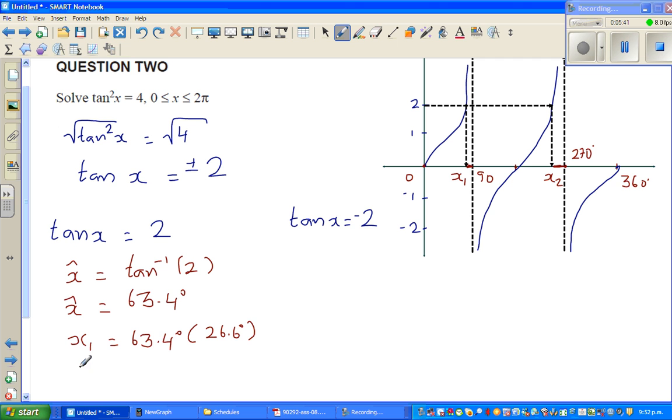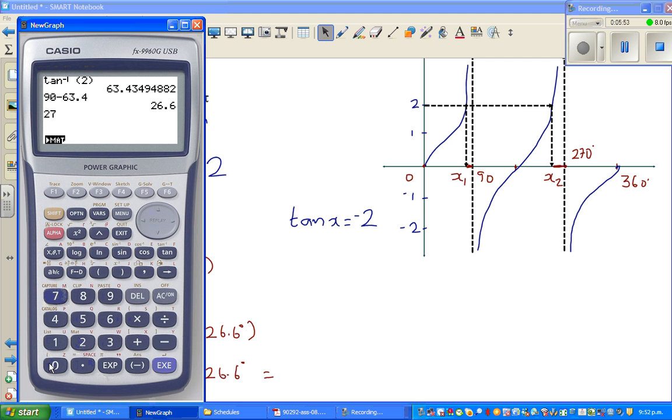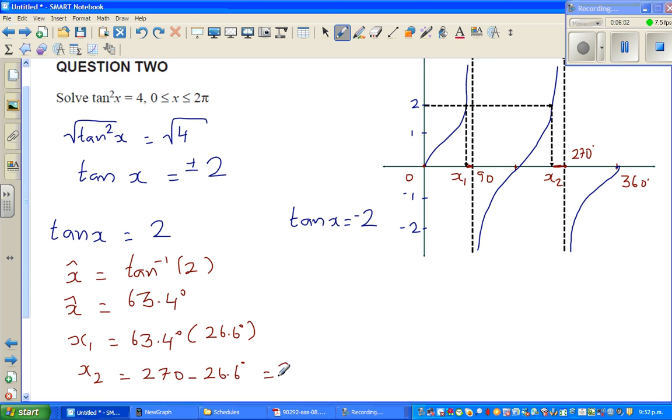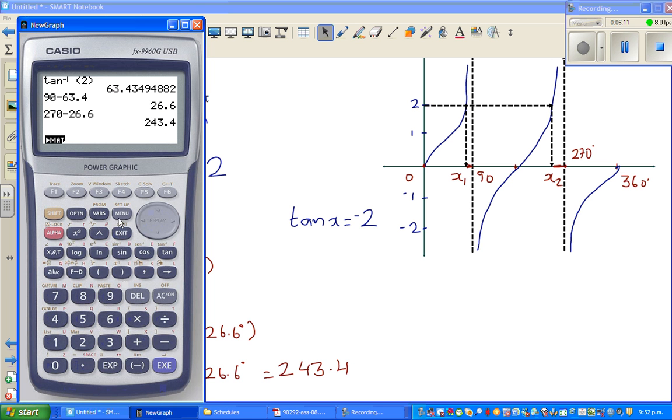So this will also be 26.6 degrees away from or to the left of 270. So x2 will be 270 minus 26.6. That is 270 minus 26.6, so the other angle is 243.4 degrees. So this is your x1 and this is your x2.